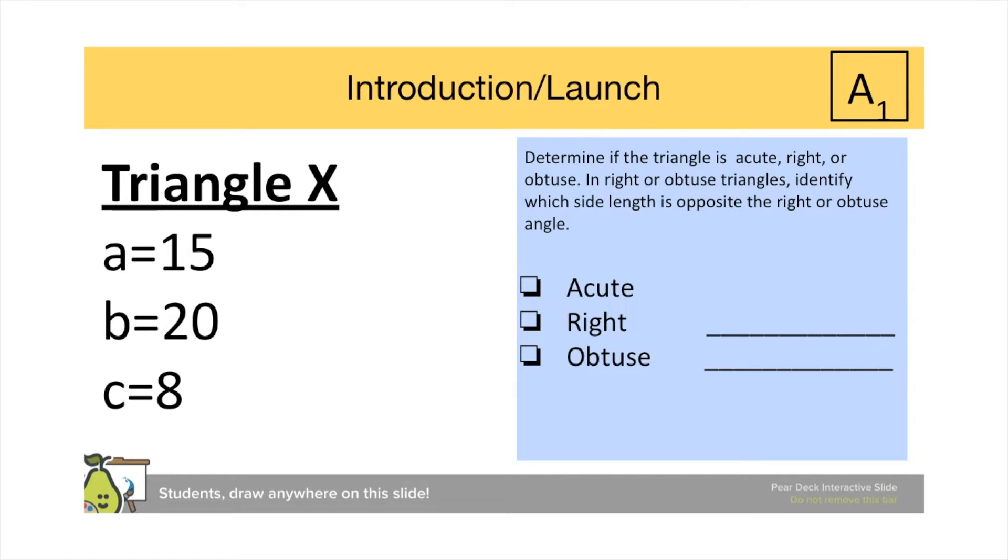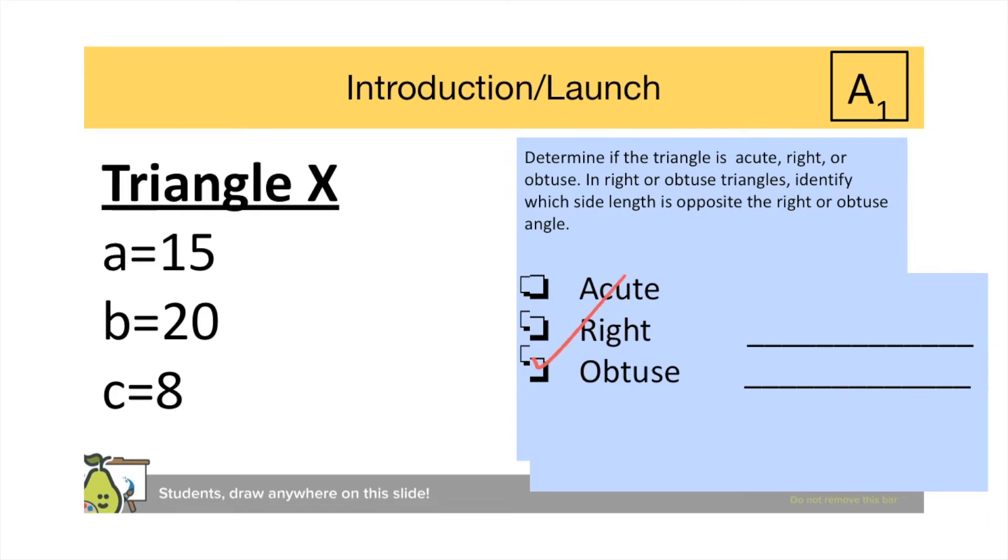Students should realize that this triangle in particular is obtuse, since eight squared plus 15 squared is less than 20 squared.